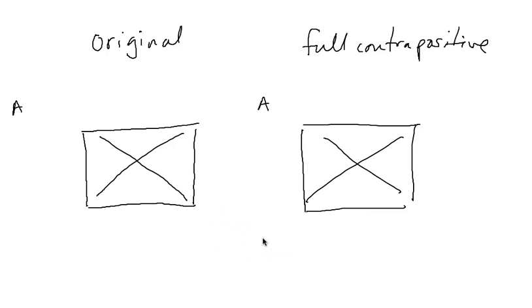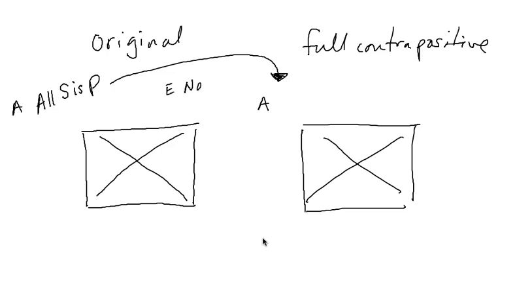So we have two squares of opposition. The original A statement says 'all S is P.' This A statement is going to help us determine the A statement for the full contrapositive square. We can also figure out the rest of the original square from this A statement. The E statement says 'no S is P,' the O statement — its contradiction — says 'some S is not P,' and the I statement says 'some S is P.'